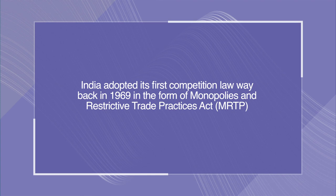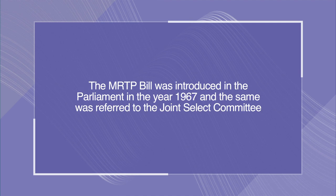India adopted its first competition law way back in 1969 in the form of Monopolies and Restrictive Trade Practices Act, i.e., the MRTP Act. The MRTP Bill was introduced in Parliament in the year 1967 and the same was referred to the Joint Selection Committee. The MRTP Act 1969 came into force with effect from the 1st of June 1970. However, with the advent of globalization, privatization and liberalization, there was felt a necessity to replace the MRTP law by a new competition law, and hence the MRTP Act was replaced with the Competition Act of 2002.